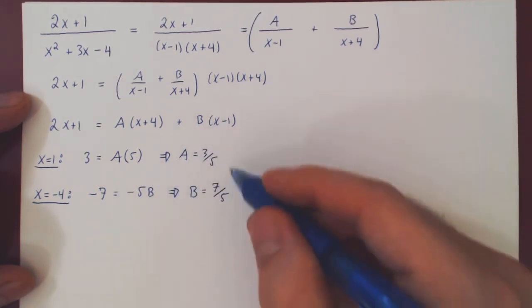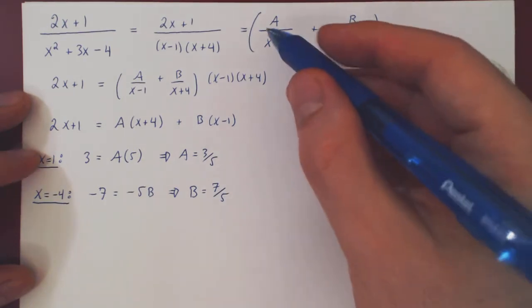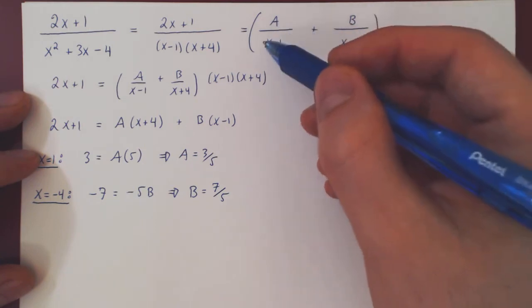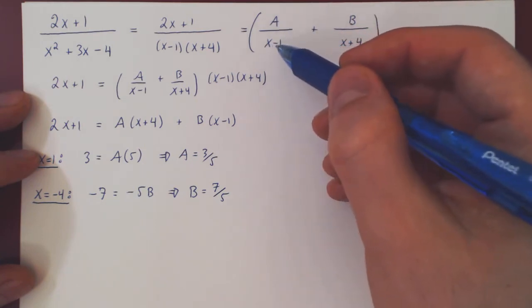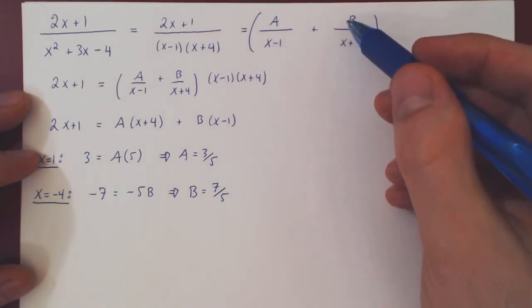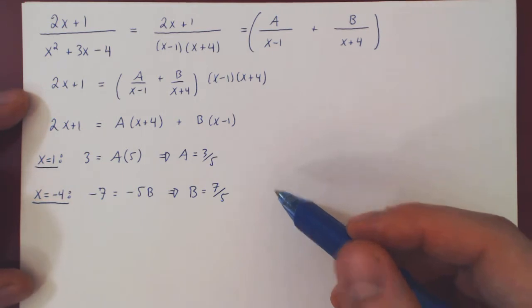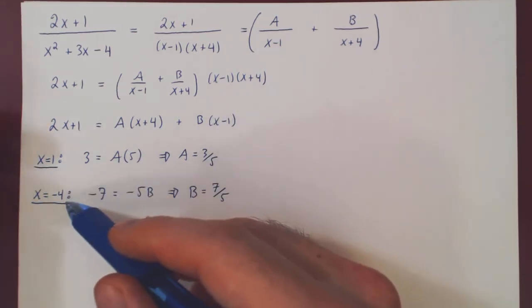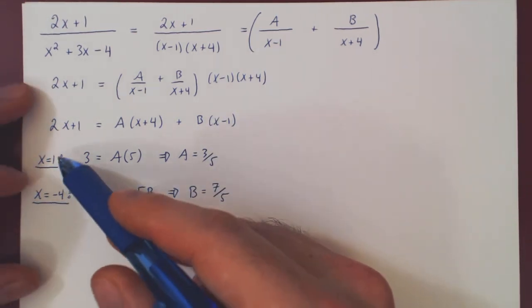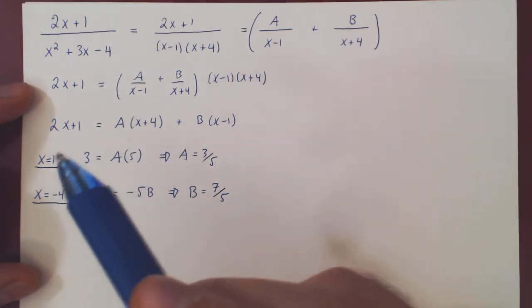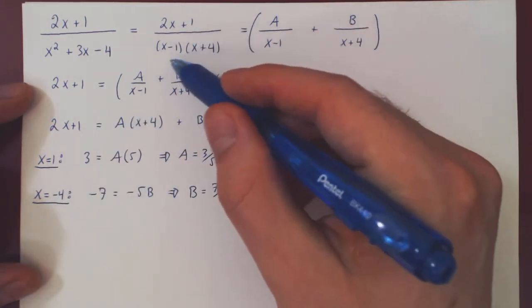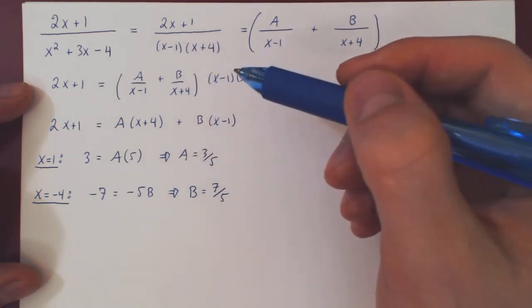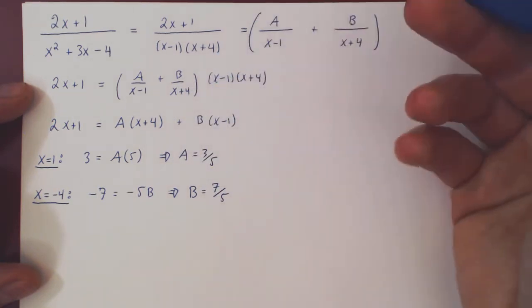We now have both coefficients. Our initial rational function is 3/5 over x minus 1 plus 7/5 over x plus 4. The problem with this first method is it does not always work — it will not be sufficient when you have a repeated linear factor, an irreducible quadratic factor, or possibly both.